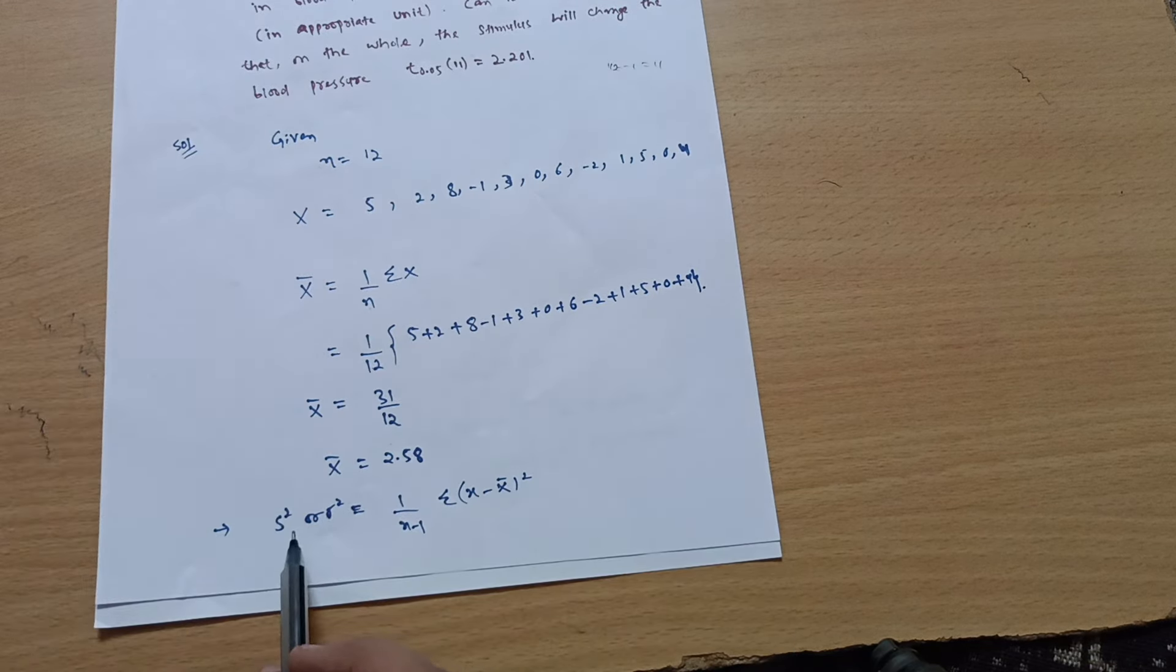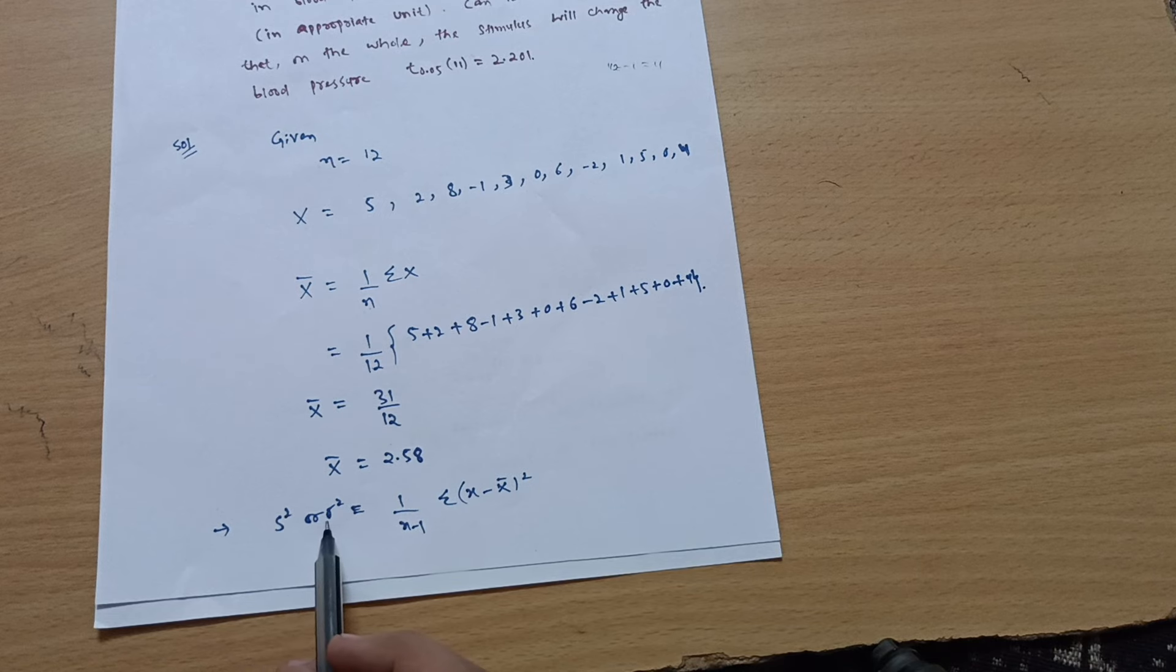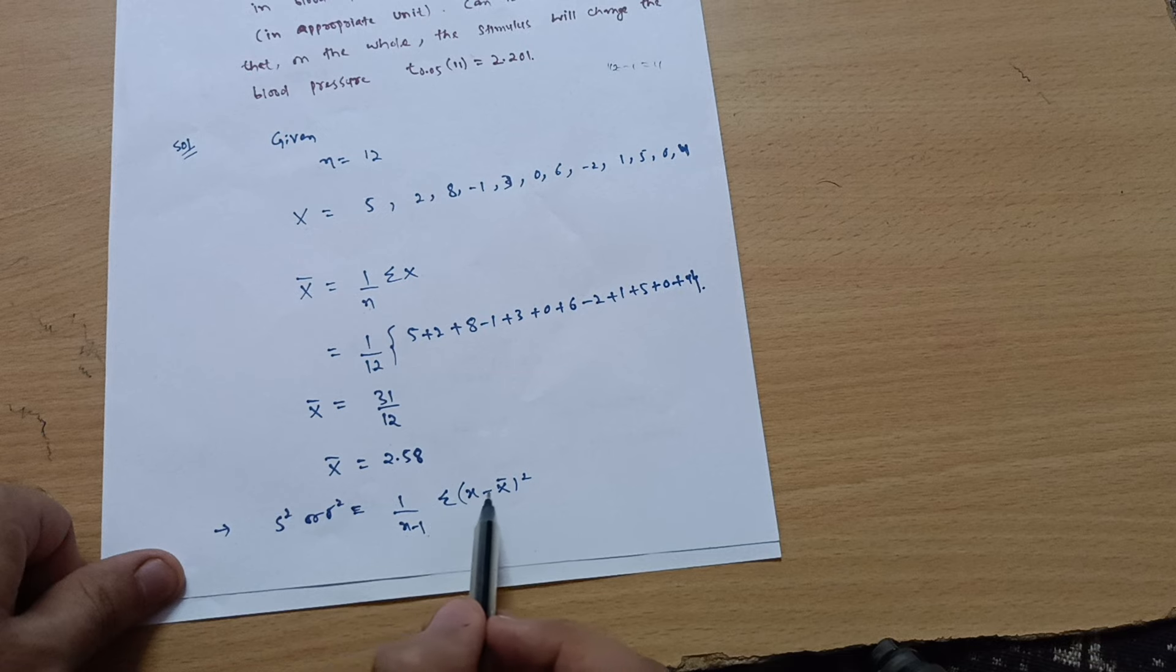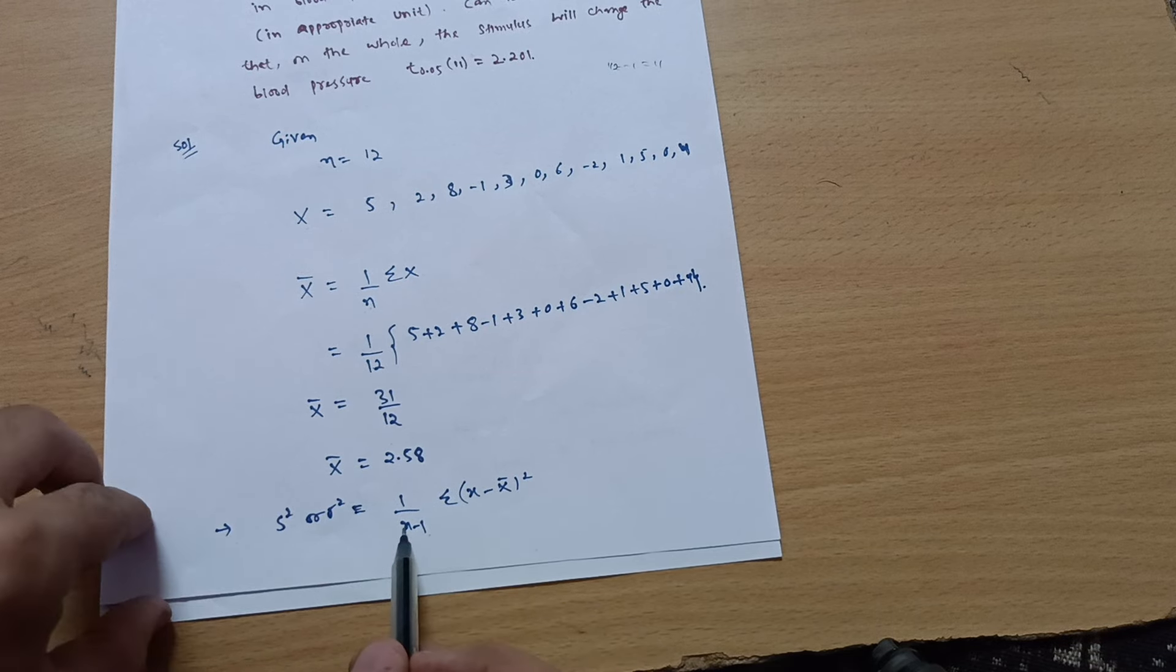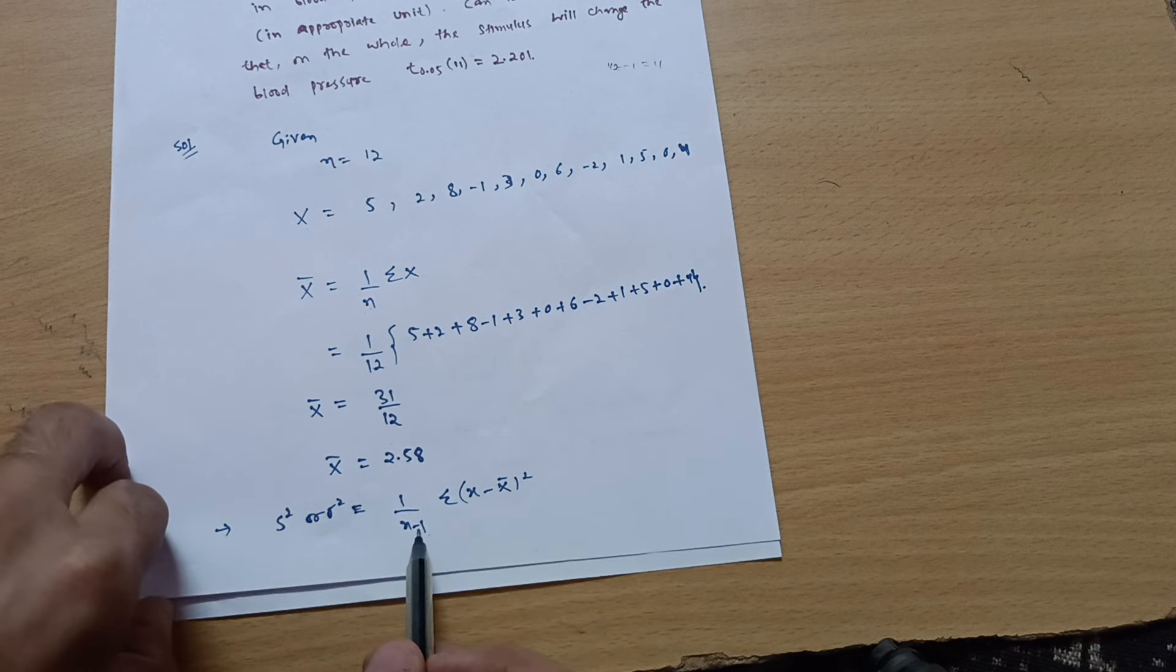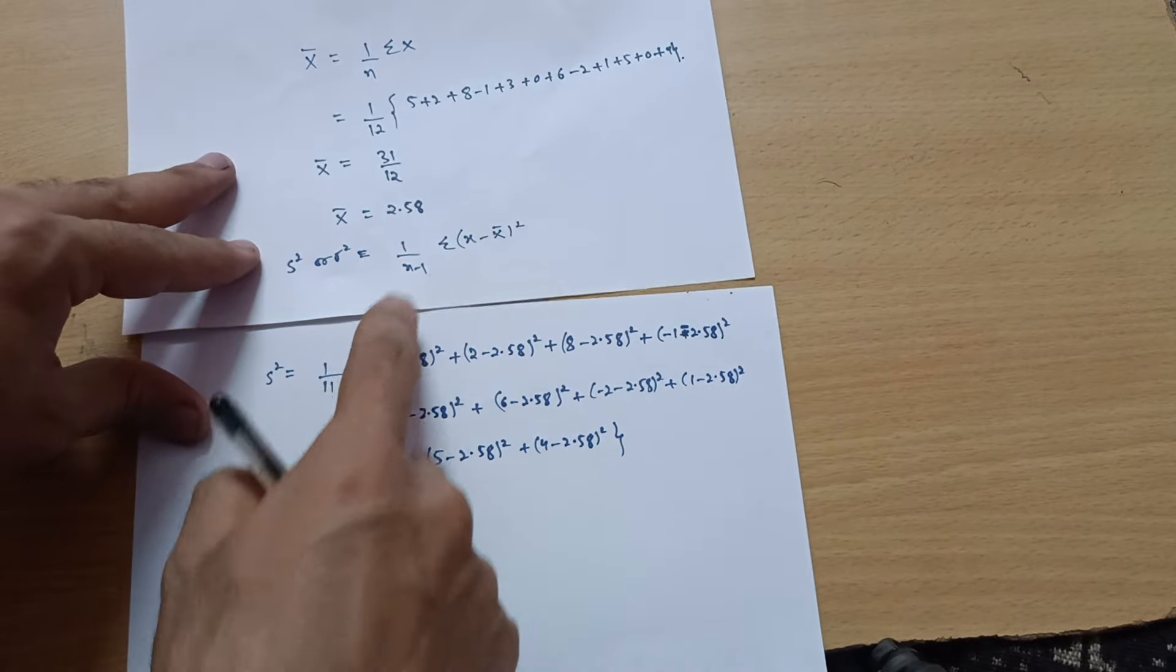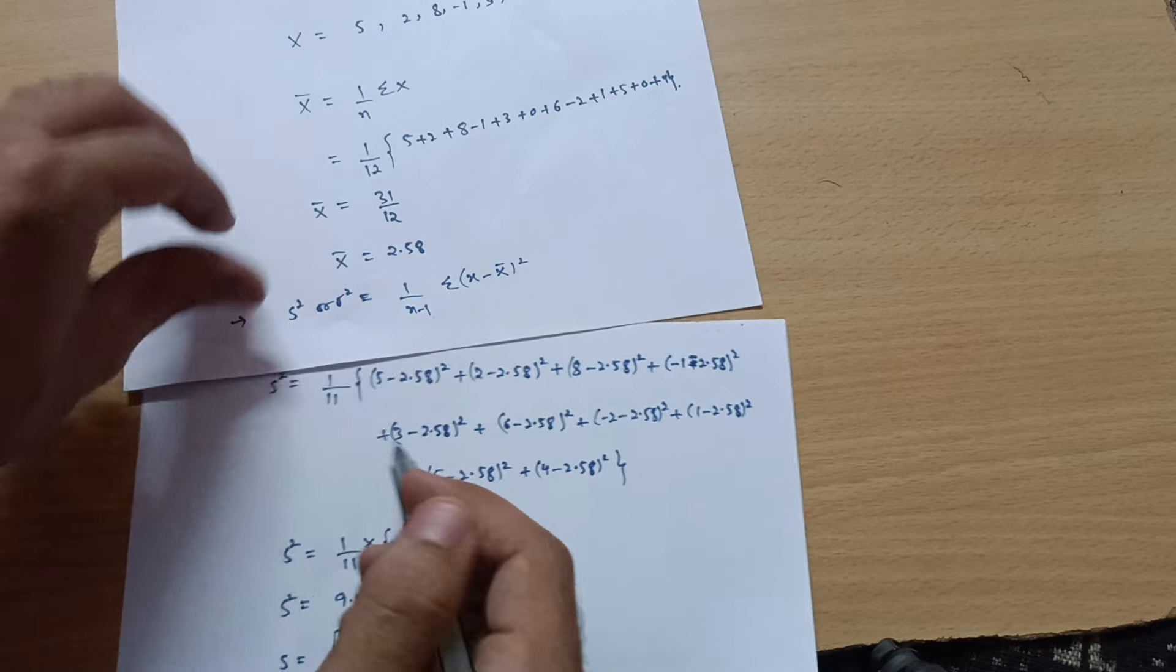Then we have the formula for the variance. It is denoted by s square or sometimes sigma square, which is equal to 1 upon n minus 1, summation of x minus x bar whole square. So, n is 12. So 1 divided by 12 minus 1, that is 1 by 11.